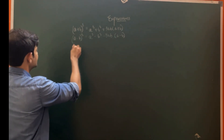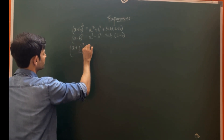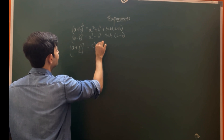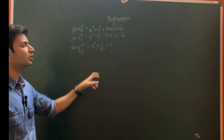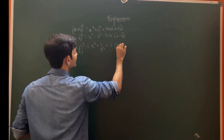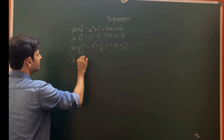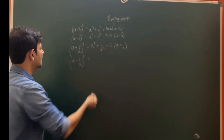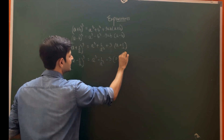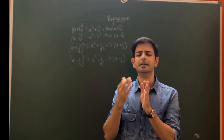For (a + 1/a)³, b is replaced by 1/a, giving a³ + 1/a³ + 3(a + 1/a), since the a cancels in the 3ab term. Similarly, (a - 1/a)³ = a³ - 1/a³ - 3(a - 1/a).